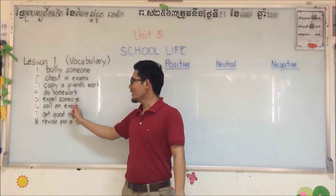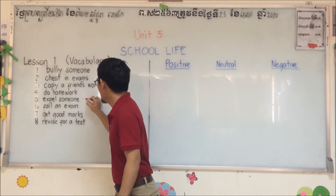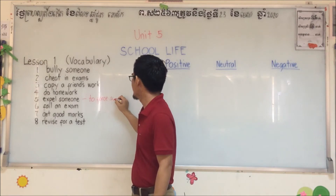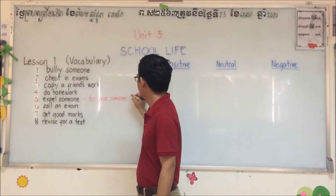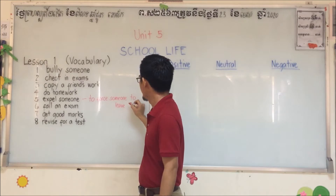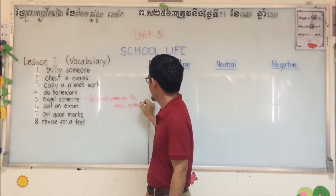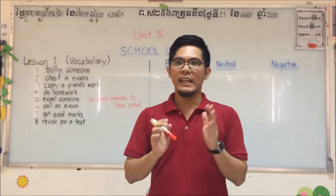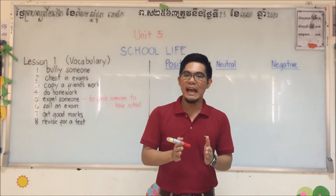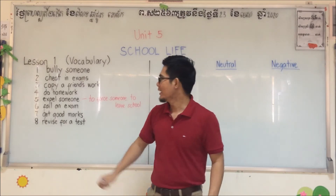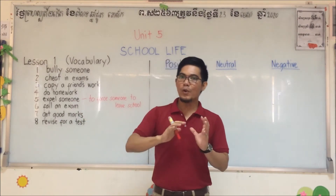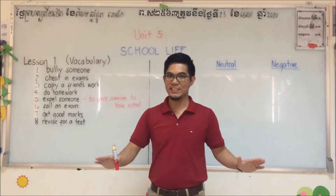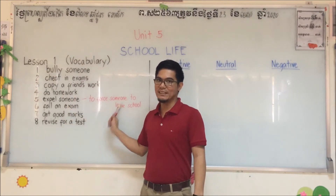Number five: expel someone. Expel means to force someone to leave school. If a student misbehaves after different warnings, the principal can expel someone, meaning you are forced to leave the school. Eventually you will stop and you are no longer welcome to study in that school. That's expel someone.